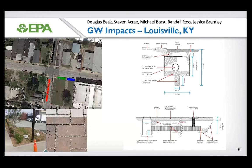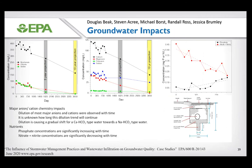Michael Borst, Doug Beak, Steve Bakery, Randall Ross, and Jessica Rumley looked at groundwater impacts from an infiltration gallery in Louisville. They looked at cations, anions, phosphate, and nitrate/nitrite in the infiltrating water. They found that anions — bicarbonate, chloride, and sulfate — declined over time and could project five- and ten-year impacts. Calcium, magnesium, potassium, and sodium showed similar declining trends. However, phosphate was actually increasing. They have developed a chemical model for these impacts, available in an EPA report.